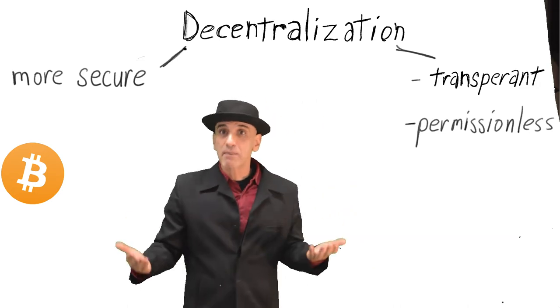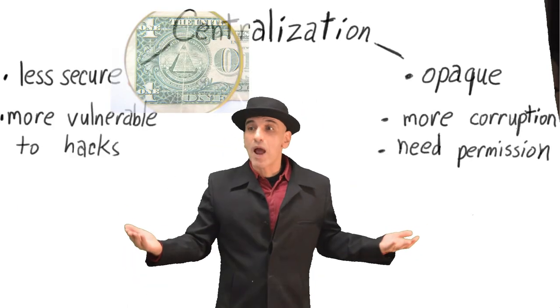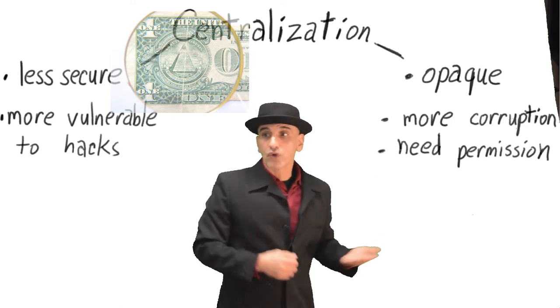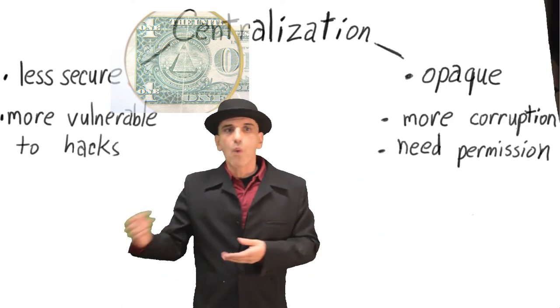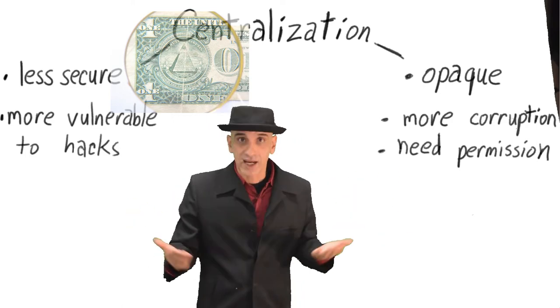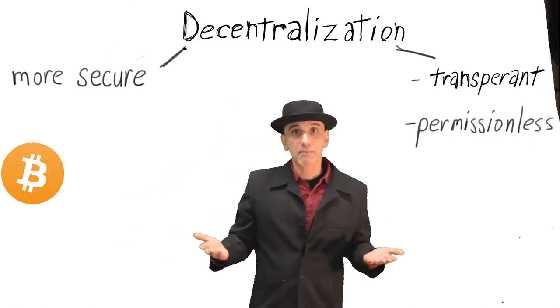Bitcoin is transparent money. Unlike the dollar, we don't know how many dollars there are, who controls the dollar, who has what, where it goes. It's very opaque. Nobody knows what's happening. But Bitcoin is transparent.